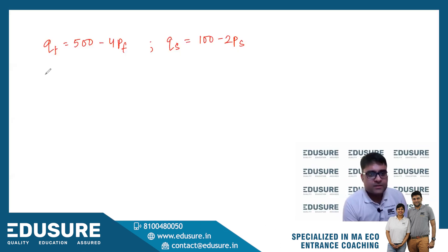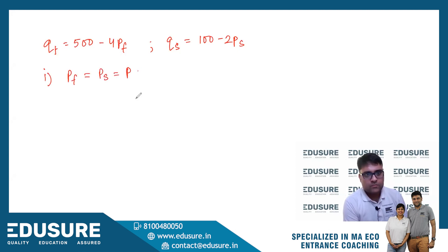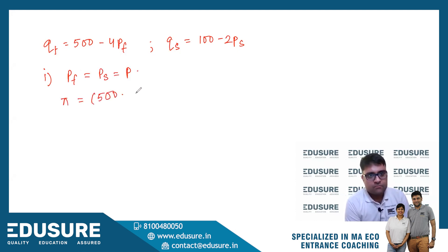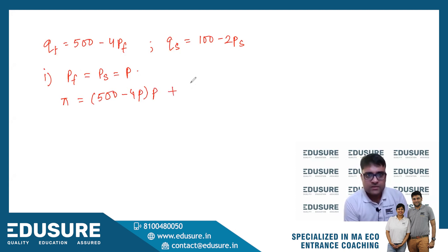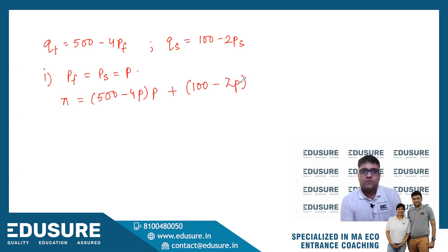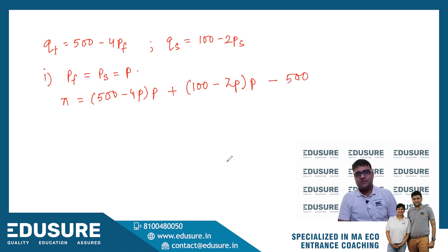When both prices are the same, the profit equals (500 minus 4p) — this is QF — multiplied by price, plus QS into p, minus 500. This is the profit equation.